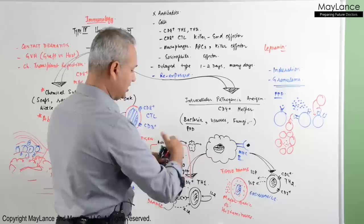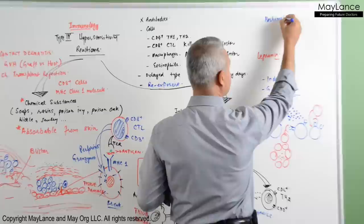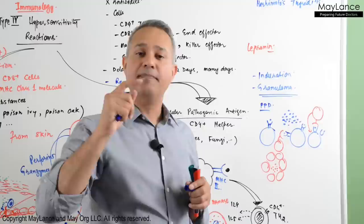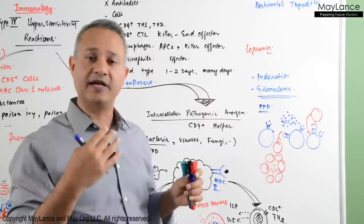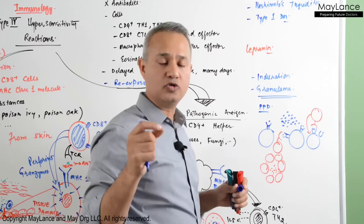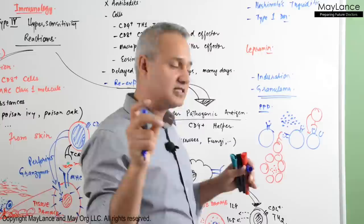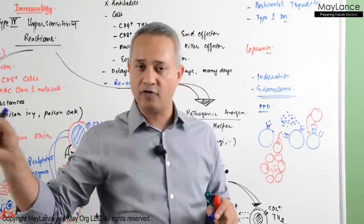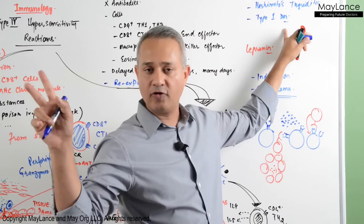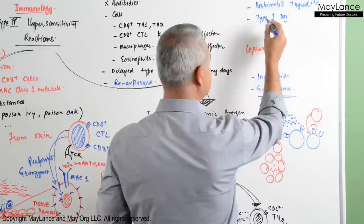The diseases that participate in the macrophage subtype include Hashimoto's thyroiditis — CD4 cells activate macrophages which kill thyroid gland cells — and type 1 diabetes mellitus. Remember the rule: type 1 diabetes multiplied by 4 equals type 4 hypersensitivity; type 2 diabetes is type 2 hypersensitivity. Type 1 diabetes mellitus and multiple sclerosis are both type 4.